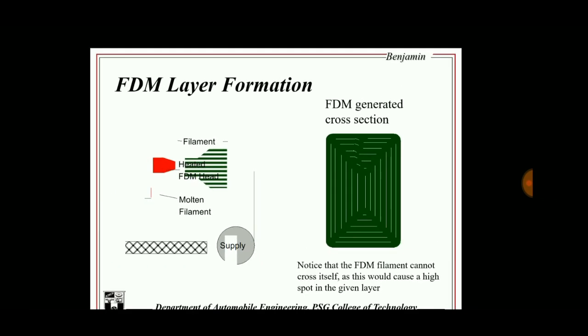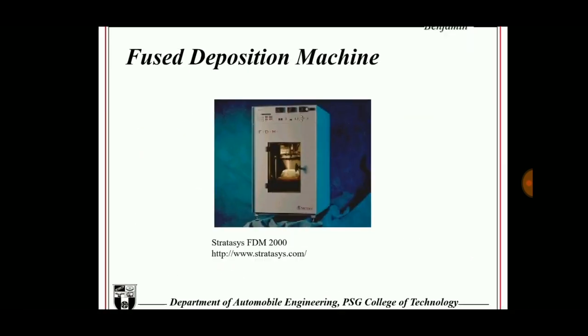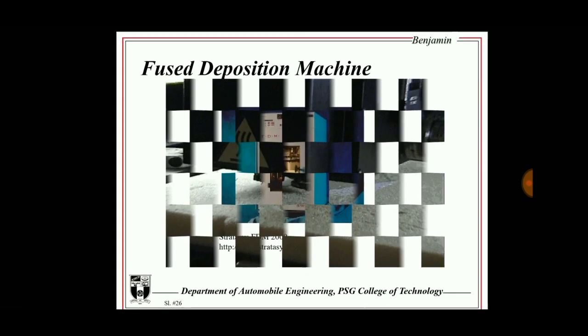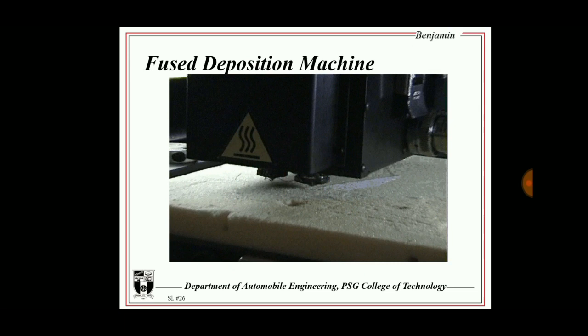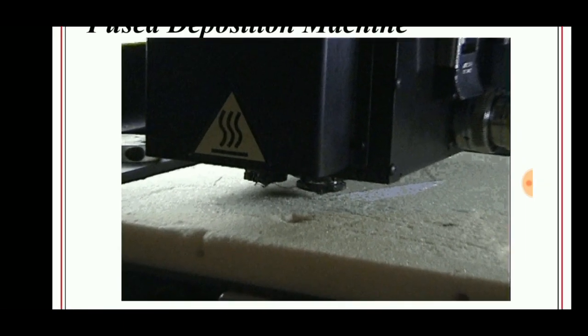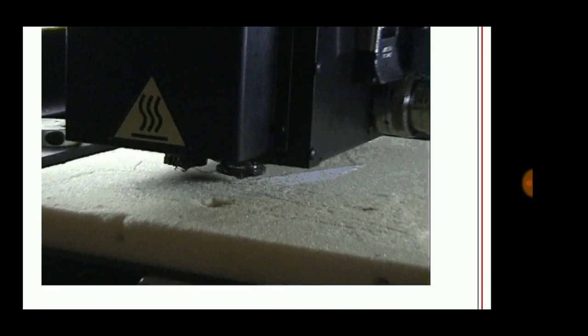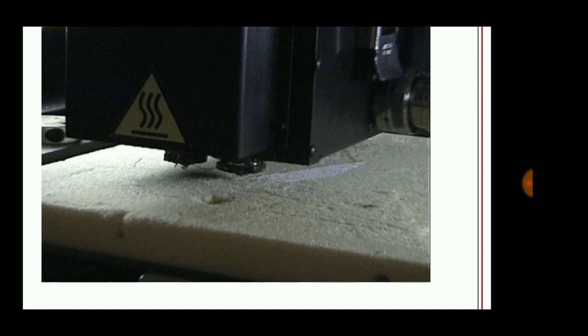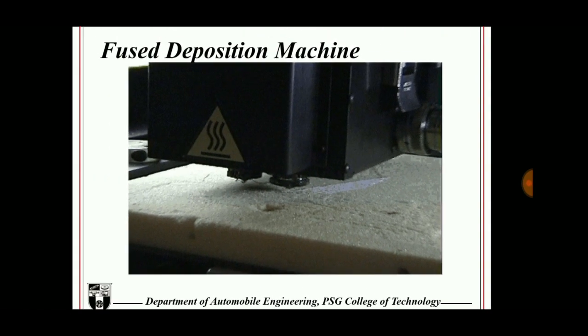This is the fused deposition machine and this is the working process of the machine. The heater converts the filament into semi-solid liquid which is then deposited on the surface.